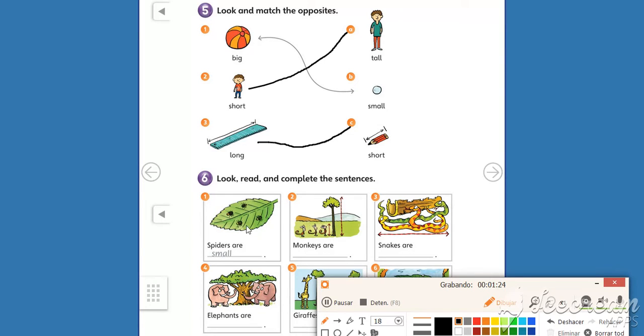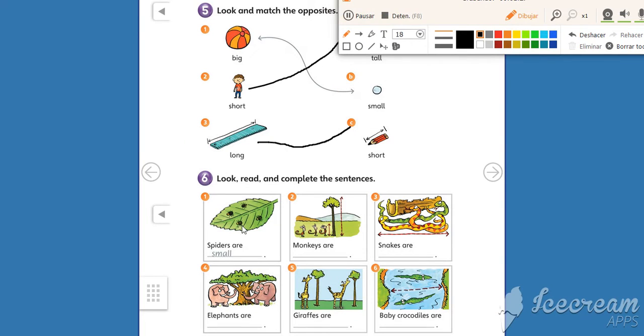Now, activity number six says, look, read, and complete the sentences. Okay? Look at the example, kids. Always look at the example. Okay?